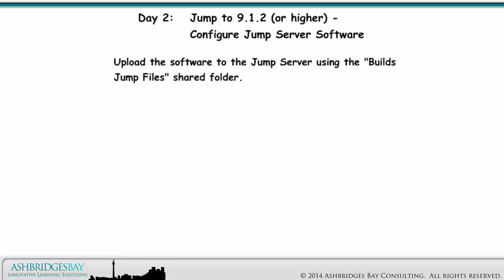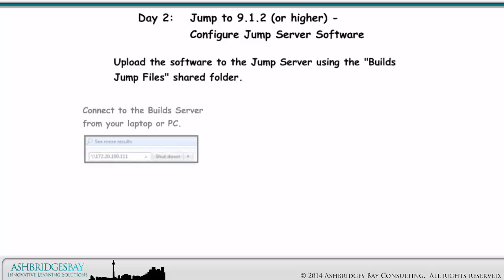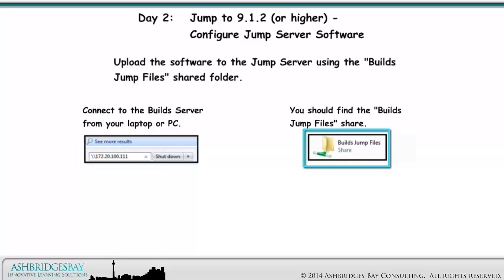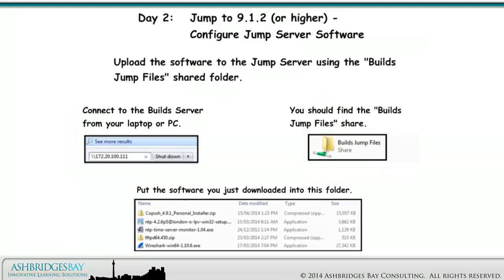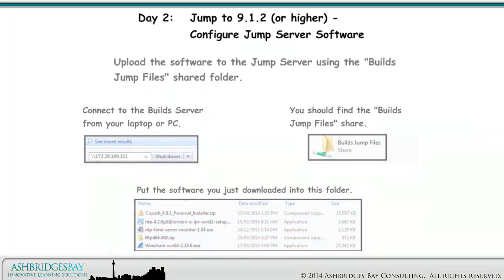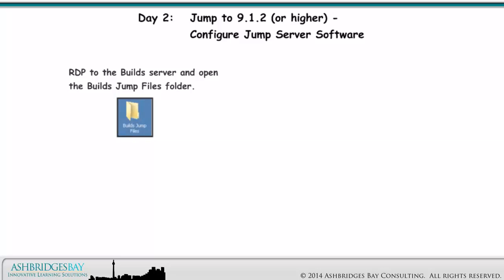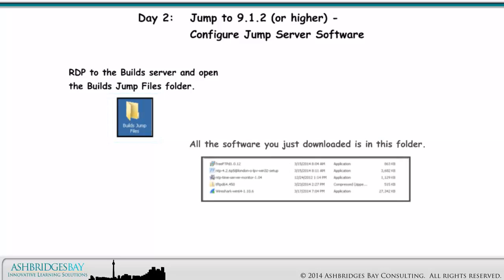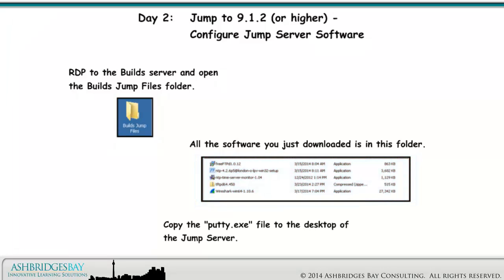Upload the software to the Jump server using the BuildsJumpFiles shared folder. Connect to the Builds server — you should find the BuildsJumpFiles share. Put the software you just downloaded into this folder. RDP to the Builds server and open the BuildsJumpFiles folder. All the software you just downloaded is in this folder. Copy the PuTTY.exe file to the desktop of the Jump server.